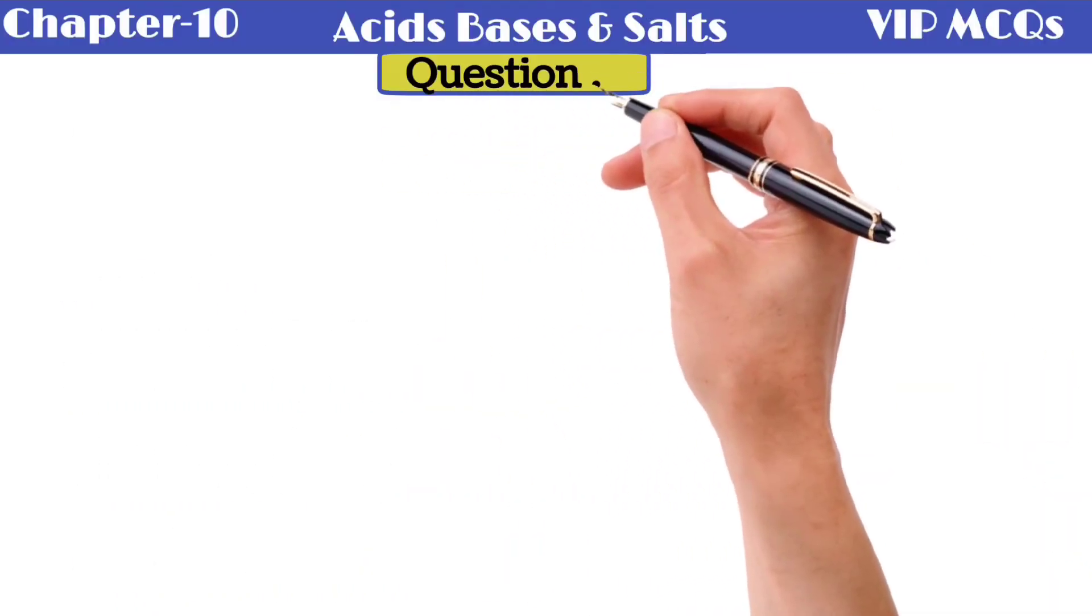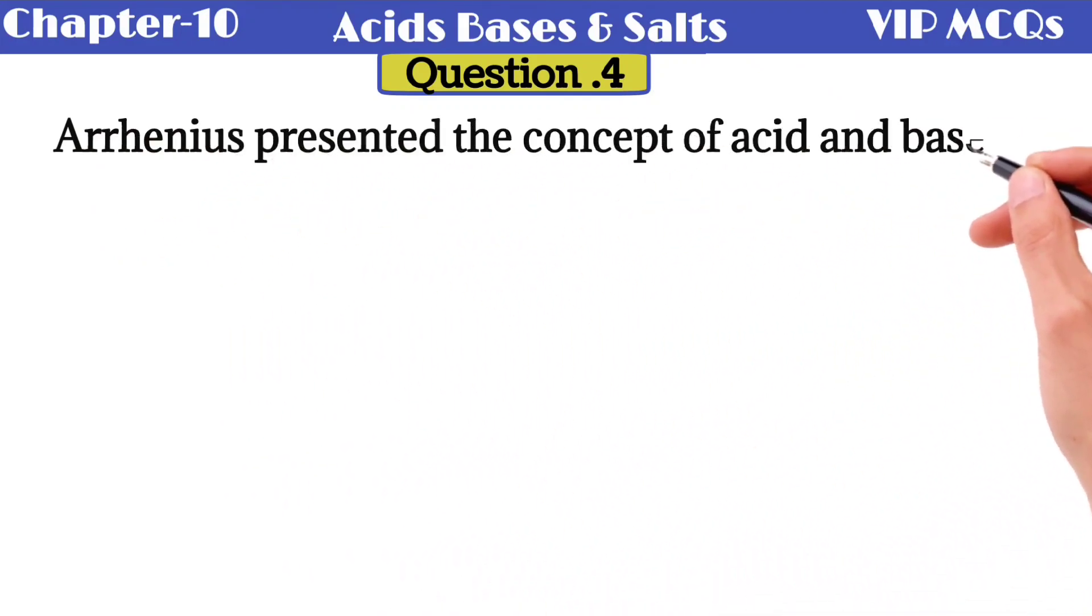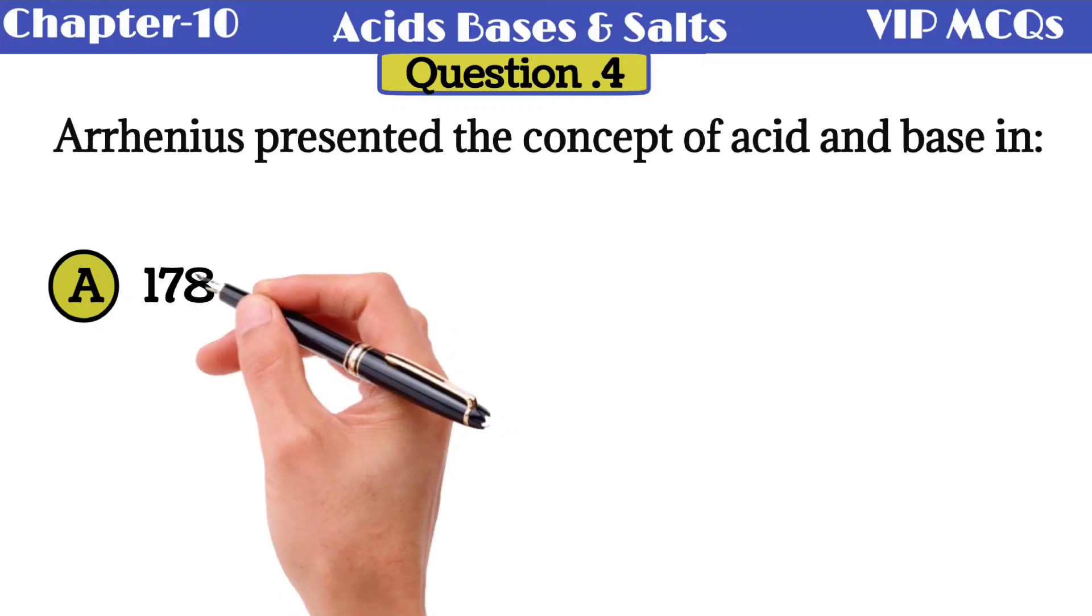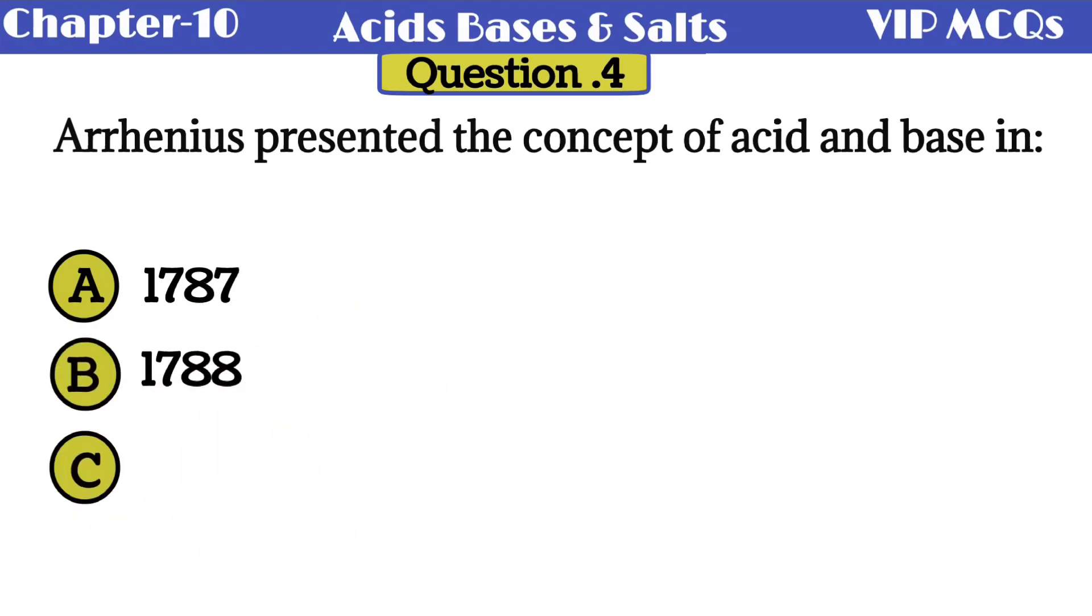Question number 4: Arrhenius presented the concept of acid and base in - option A 1787, option B 1788, option C 1789, and option D 1790. Arrhenius presented the concept of acid and base in 1787.